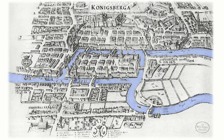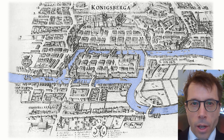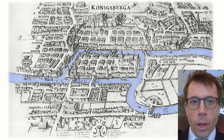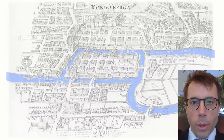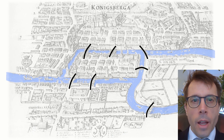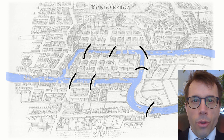We'll start off with the first graph problem of them all: the bridges of Königsberg. This problem dates from 1735, from the city that was then called Königsberg and is now called Kaliningrad. The city has a river running through it and it has seven picturesque bridges. Leonard Euler, a mathematician who lived in Königsberg, was asked the question: can I go for a stroll around the city on a route that crosses each bridge exactly once?